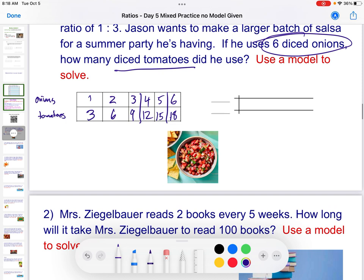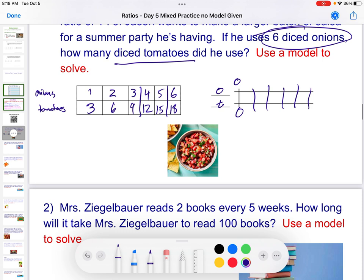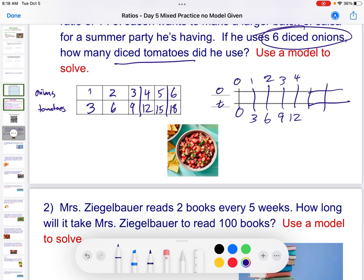And a double number line would look very similar to this. Onions, tomatoes, I start with zero and zero. And I would, again, think about how if my onions starts at one and my tomatoes at three, if I get a new onion, I'm going to get three new tomatoes. So I'm just going to continue to do this. Maybe you like one method over the other. But 18 onions. And I'm going to make sure to write this down because that's the answer. 18 onions.